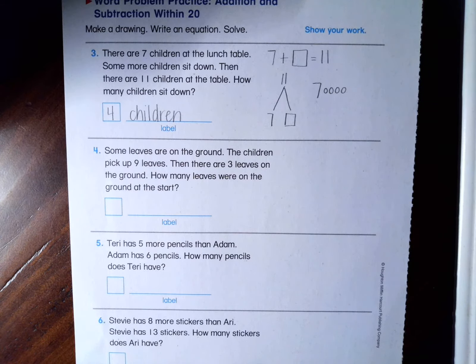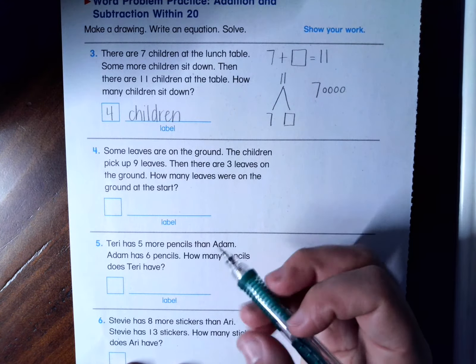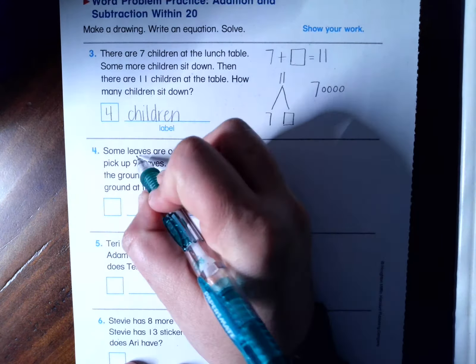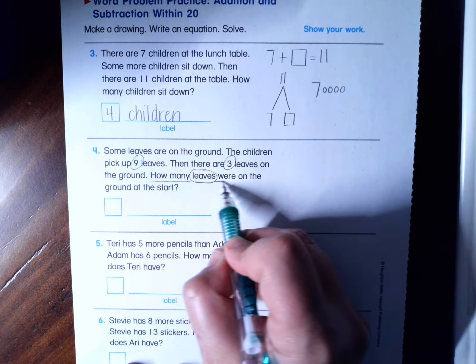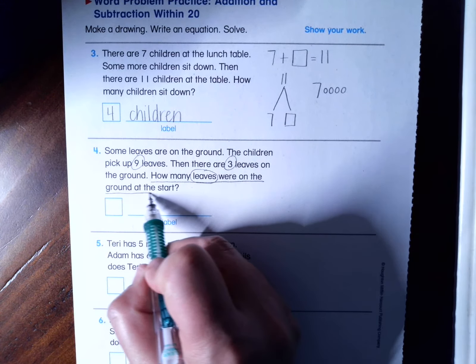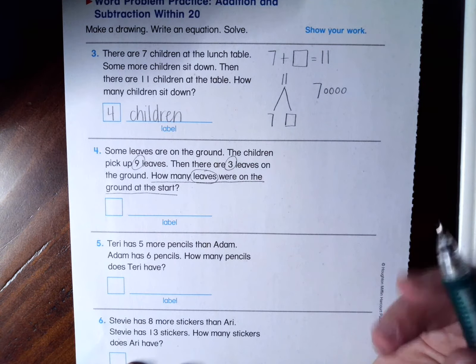Number four, some leaves are on the ground. The children pick up nine leaves, then there are three on the ground. How many leaves were on the ground at the start? So this is one of those kind of more confusing problems. Let's use our CUBES strategy to figure out what we're actually doing. So I see the number nine and three. I know my label is leaves.